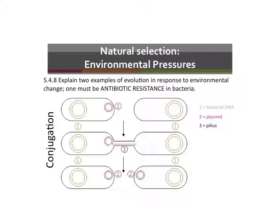This is a closer look at the last mechanism of incorporating DNA into a bacteria cell. Conjugation involves two different bacteria cells passing along a plasmid that contains the genes through the pilus into the new bacterium. That's a mechanism that bacteria cells use often to transfer genes from one bacterium to another.